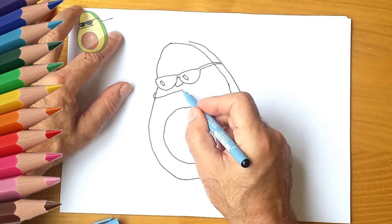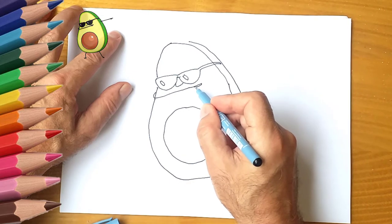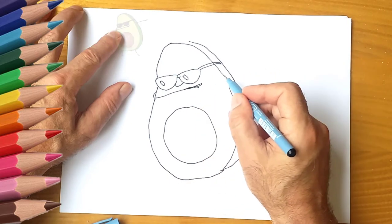Next we paint the avocado green. Draw the part where the avocado peel still remains. Sketch the glasses in black.